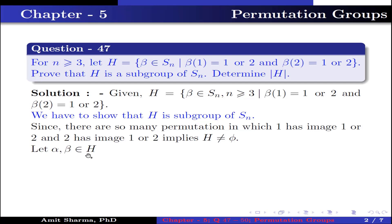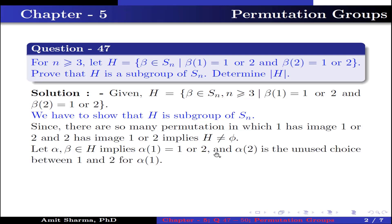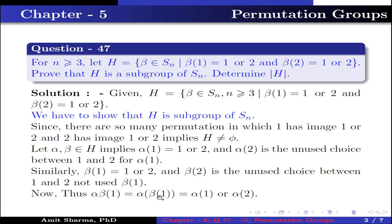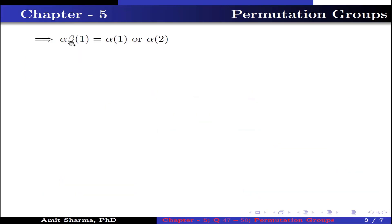Let alpha, beta belong to H. This implies alpha(1) is 1 or 2, and alpha(2) is the other value between 1 and 2 not used by alpha(1). Similarly, beta(1) is 1 or 2, and beta(2) is the other value between 1 and 2 not used by beta(1). Thus we find the value of alpha·beta of 1, which equals alpha(beta(1)). Now beta(1) is 1 or 2, so alpha(beta(1)) is alpha(1) or alpha(2), which is either 1 or 2.